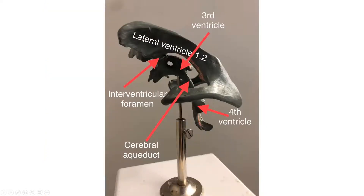Here's a model of the ventricles. You get two lateral ventricles, third, fourth, and the connections between the two: the interventricular foramen and the cerebral, or mesencephalic, aqueduct. This is another good lab test model to identify the ventricles. The pink stuff that you're seeing here is the choroid plexus making the cerebrospinal fluid.